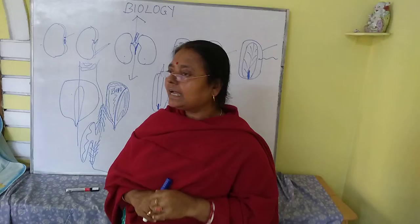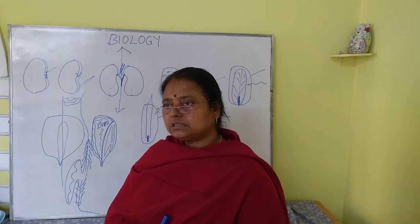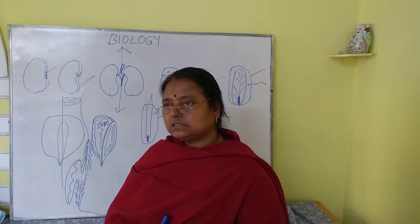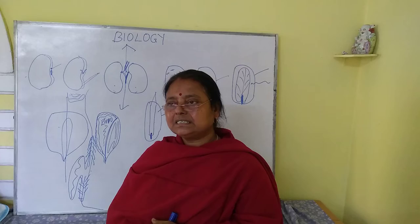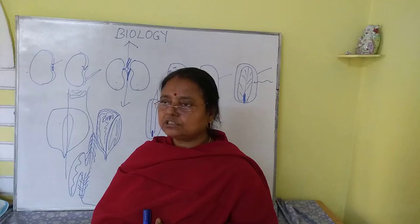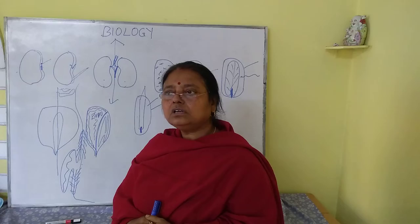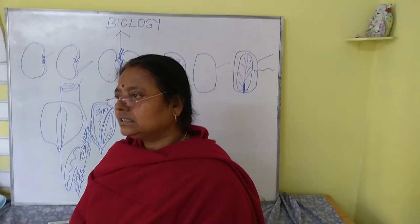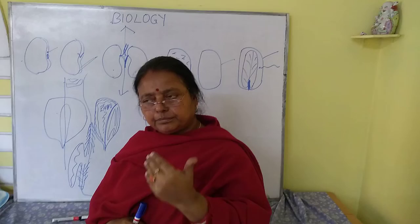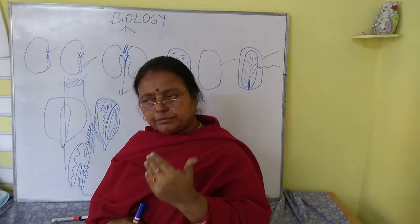Now two more terms: apomixis and polyembryony. Parthenocarpy was fruit formation without fertilization; apomixis is seed formation without fertilization. In apomixis, the diploid egg cell does not undergo reduction division and develops into the embryo, retaining the same characteristics as the parent plant. The advantage of apomixis is that when we create hybrid plants and sow the seeds, if we can induce apomixis, we will keep getting the same hybrid qualities without segregation of characters.